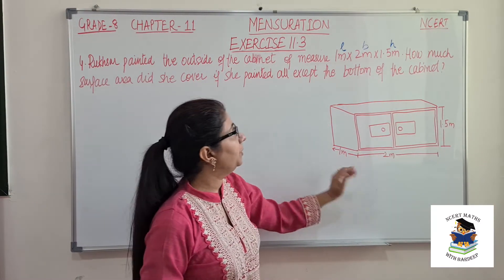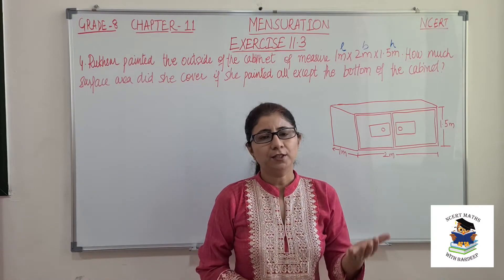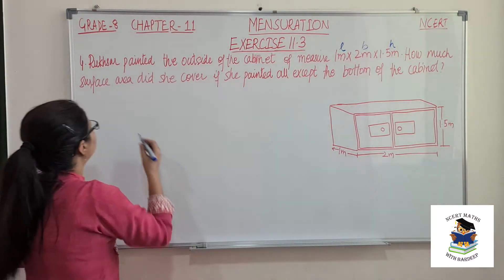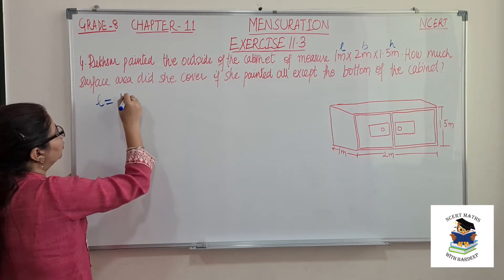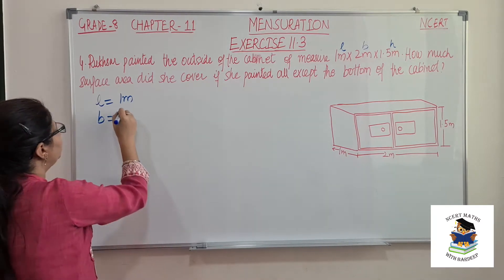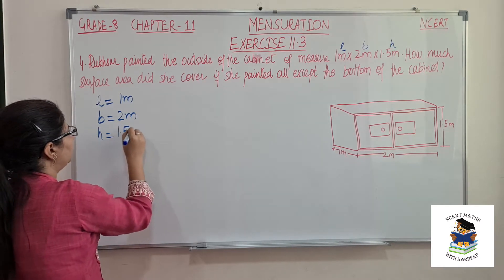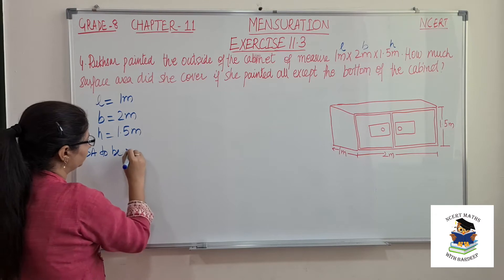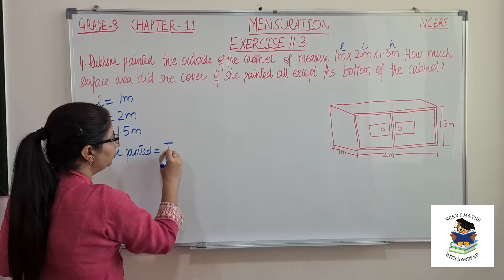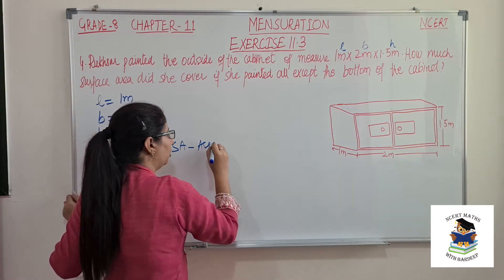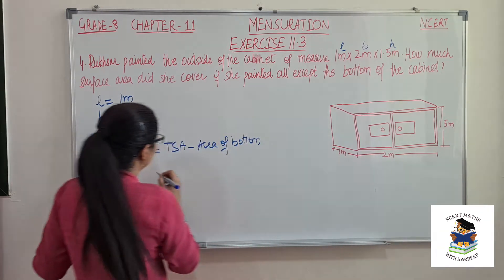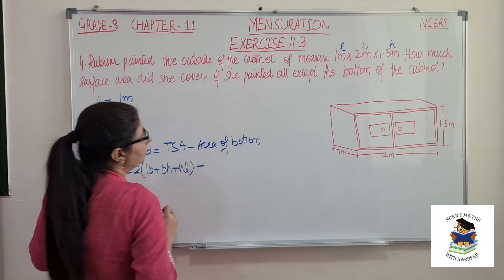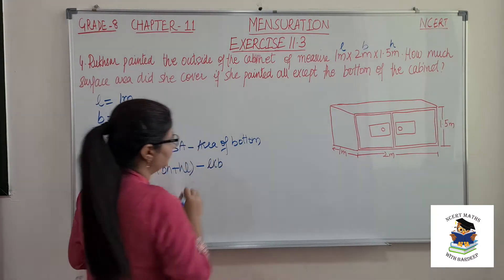We need to find the total surface area of this cabinet minus the bottom. The bottom is always L into B. Total surface area of a cuboid is 2 times LB plus BH plus HL, but we don't want the bottom, so we subtract LB. Here L is 1 meter, B is 2 meters, and H is 1.5 meter.